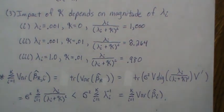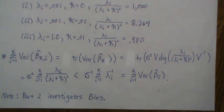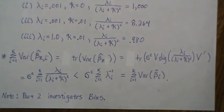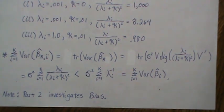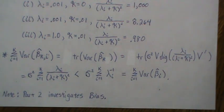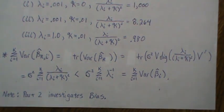We've reduced the variance, but at what cost? The cost is that our beta parameters are now biased. In part two we're going to investigate the bias in these beta parameters for the ridge estimator. That's all for this video — please like and subscribe so you don't miss the next one.